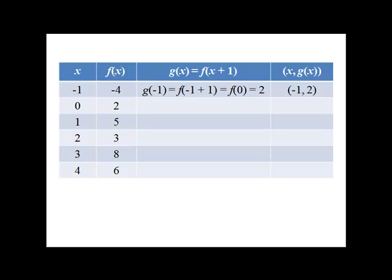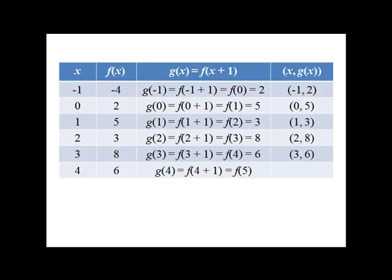And so we're going to follow this method with all of our points. When x is 0, we'll have g of 0 equals f of 1, which is 5. This is how we'll build our points.